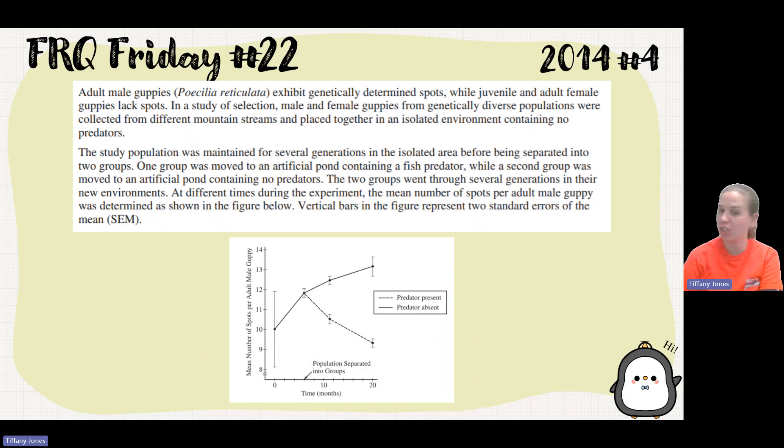The study population was maintained for several generations in an isolated area before being separated into two groups. One group was moved to an artificial pond containing a fish predator, while a second group was moved to an artificial pond containing no predators. The two groups went through several generations in their new environments. At different times during the experiment, the mean number of spots per adult male guppy was determined as shown in the figure below. Vertical bars in the figure represent two standard errors of the mean, or SEM.